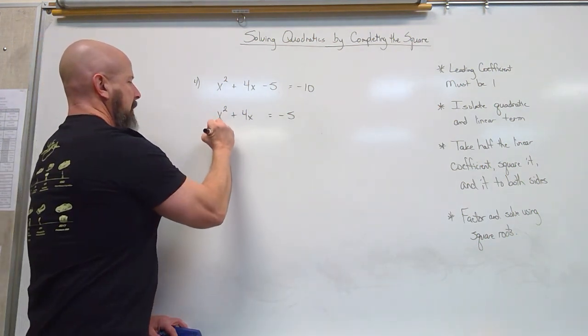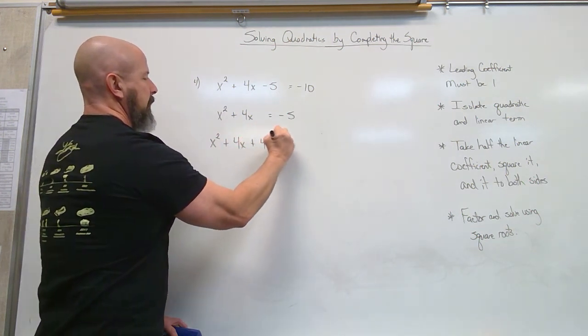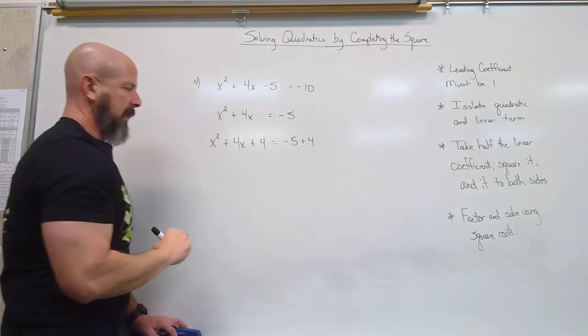Take half. Half of 4 is 2. Squared is 4. So I'm adding 4 to both sides.